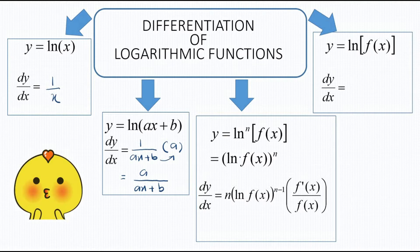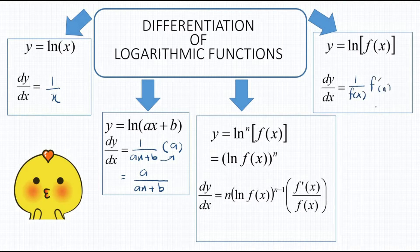The third rule: if we have y equal to ln(f(x)), then dy/dx would be equal to 1 over f(x) times f′(x), which we can rewrite as f′(x) divided by f(x). It is still a fraction.